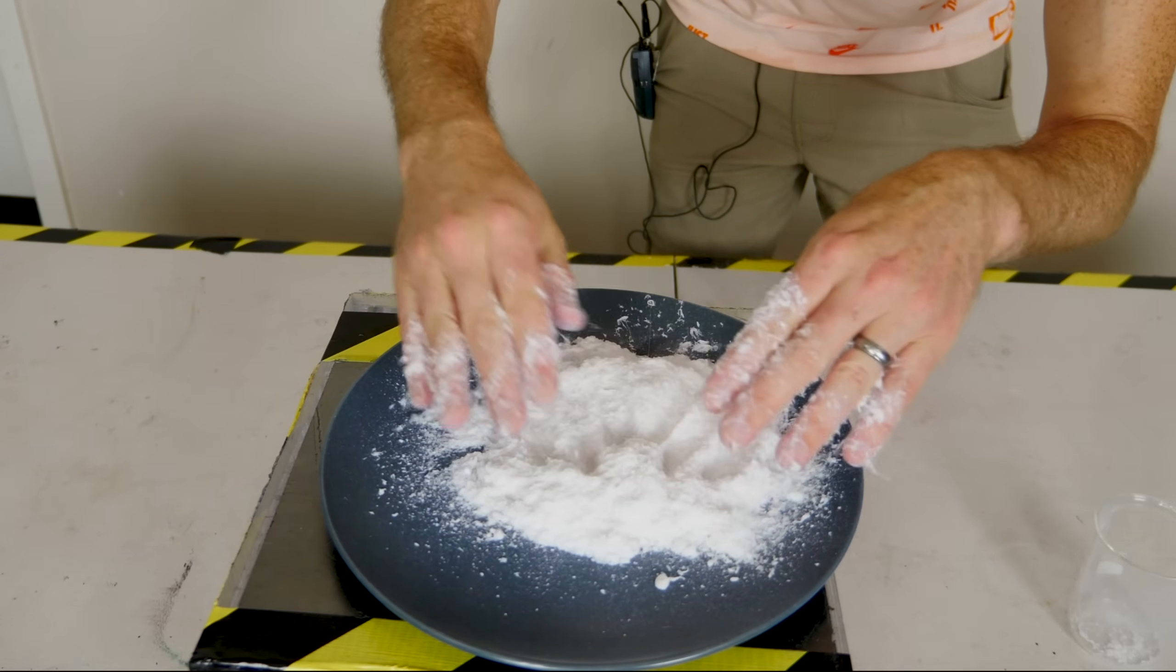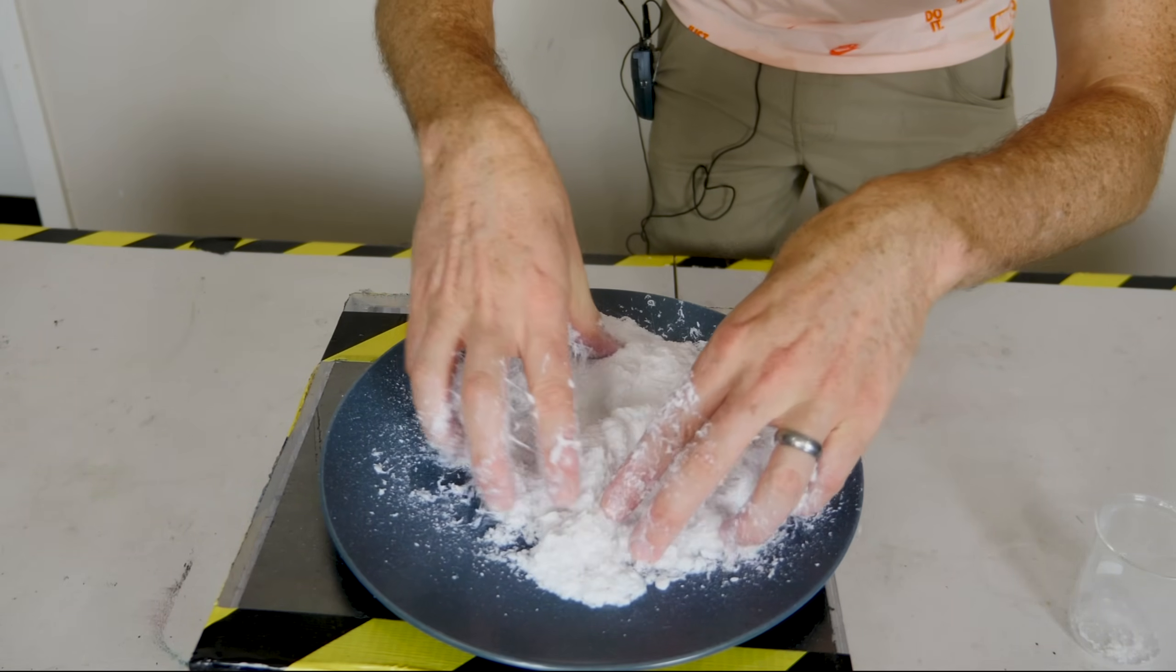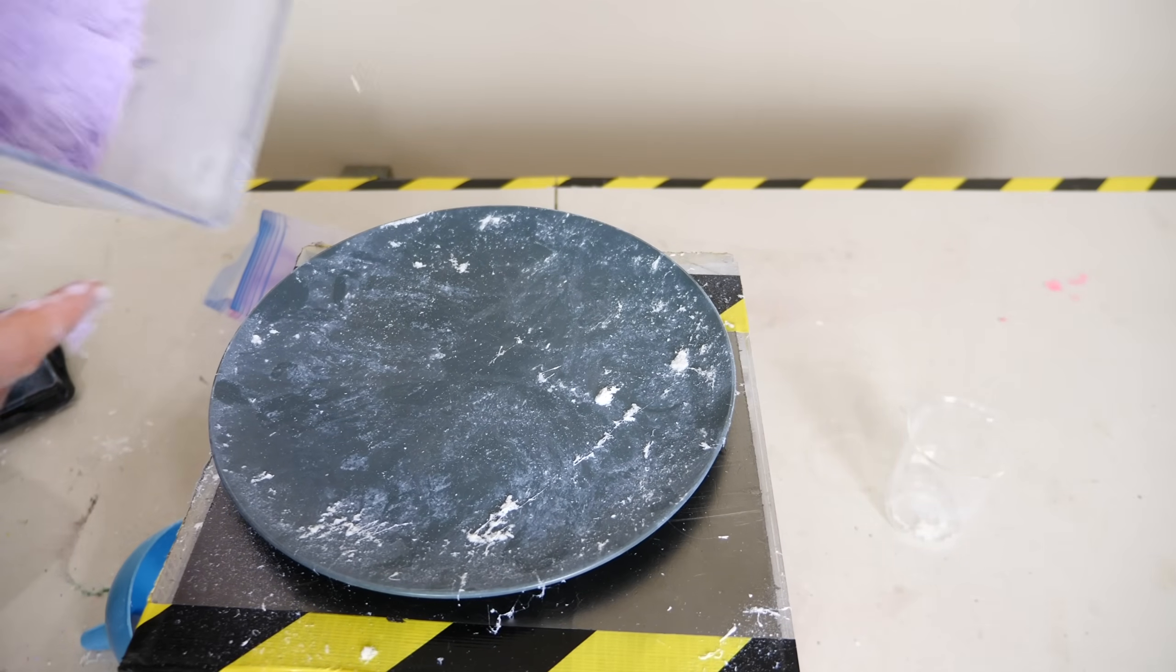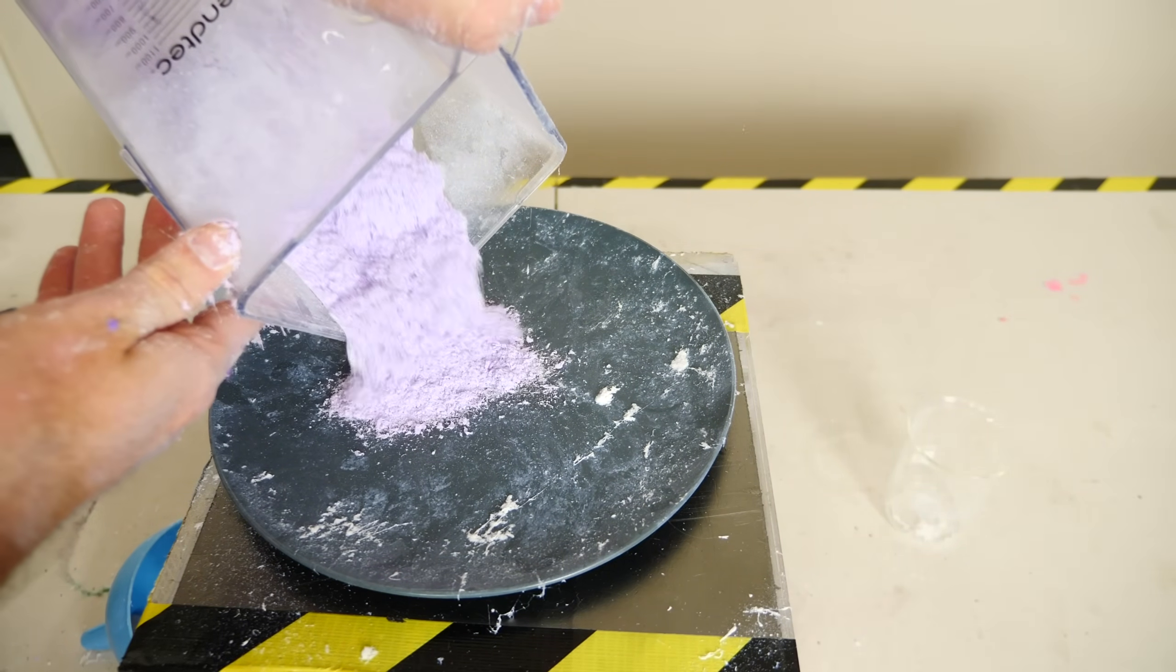Now depending on how much fumed silica I added to it, I could get different textures. If I wanted it to be more powdery or less powdery, I just added more fumed silica or not.